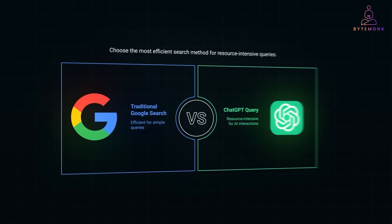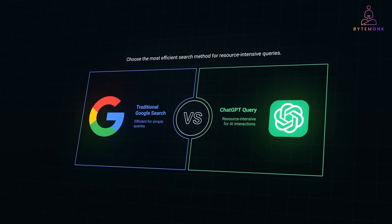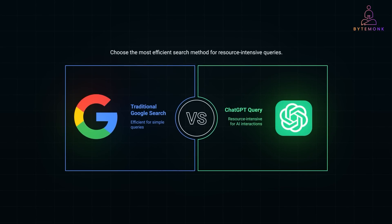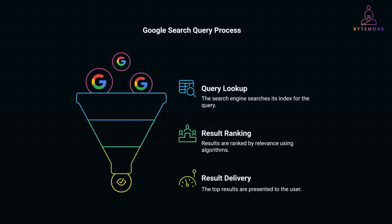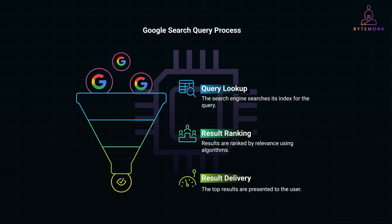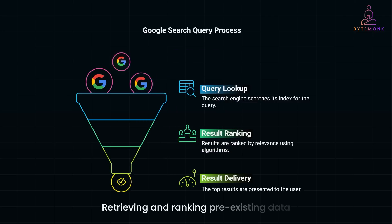Let's talk about the difference between a traditional Google search and a query to ChatGPT. This really highlights how AI workloads are fundamentally different and much more resource intensive. When you type a query to Google, here is what happens. The search engine looks up your query in a massive index of web pages. It ranks the results based on relevance using algorithms like PageRank. And it then serves you the top results in milliseconds. This process is highly optimized and relies on CPUs. While it's computationally intensive, it's mostly about retrieving and ranking pre-existing data. It doesn't require generating new content or performing complex calculations on the fly.